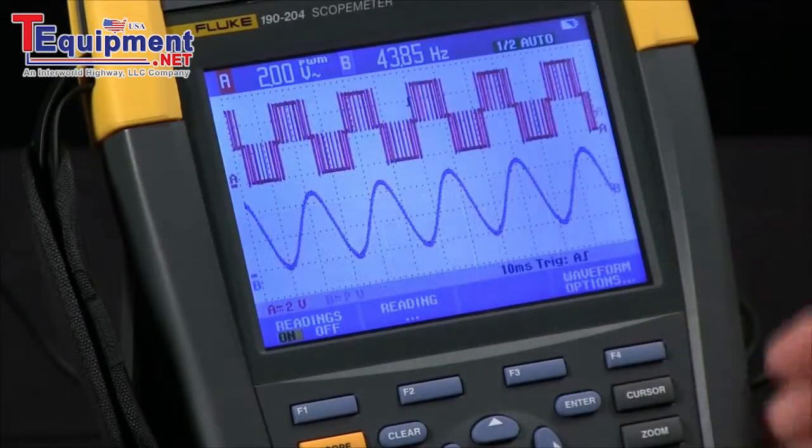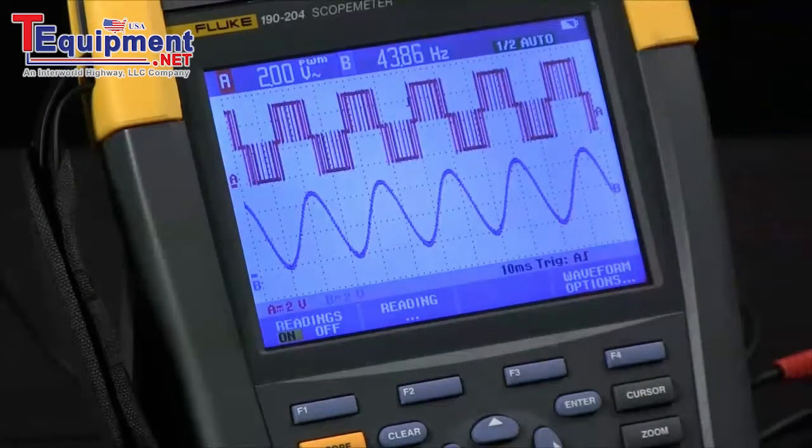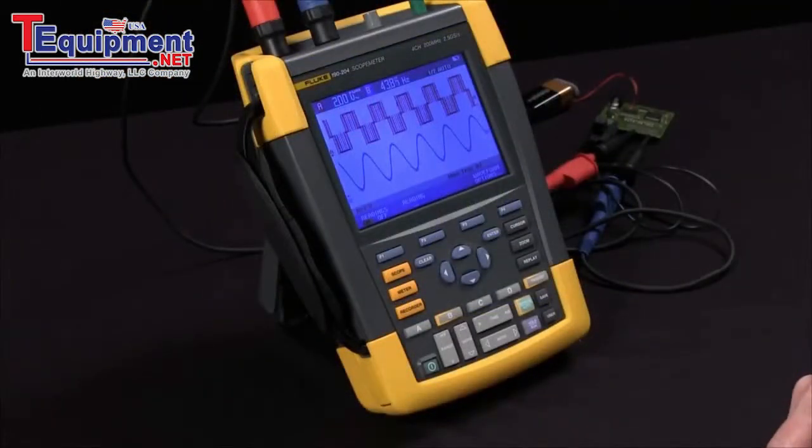We close that, now we have a reading for A, a reading for B, and that's some basic setup for the Fluke Scope Meter.